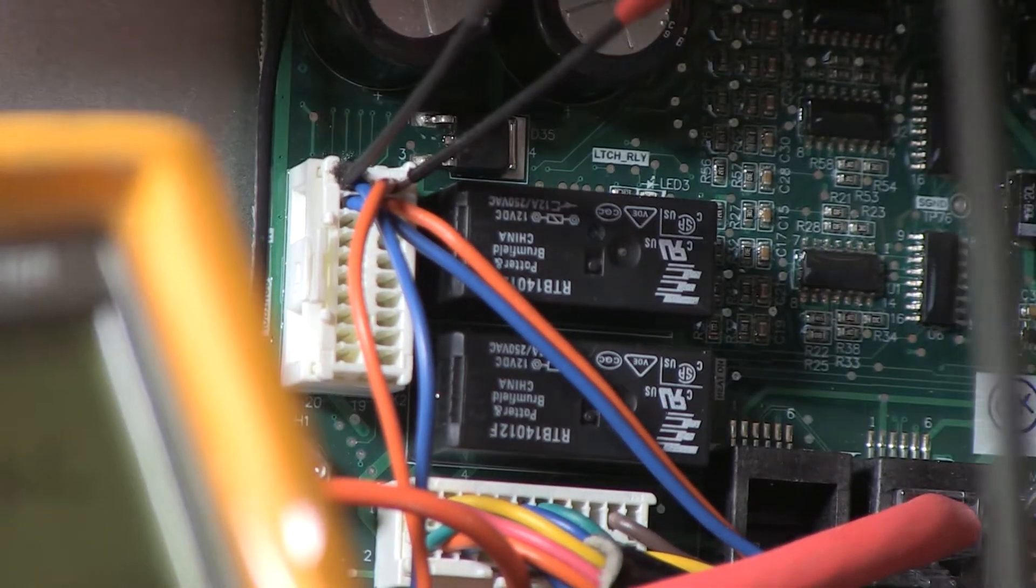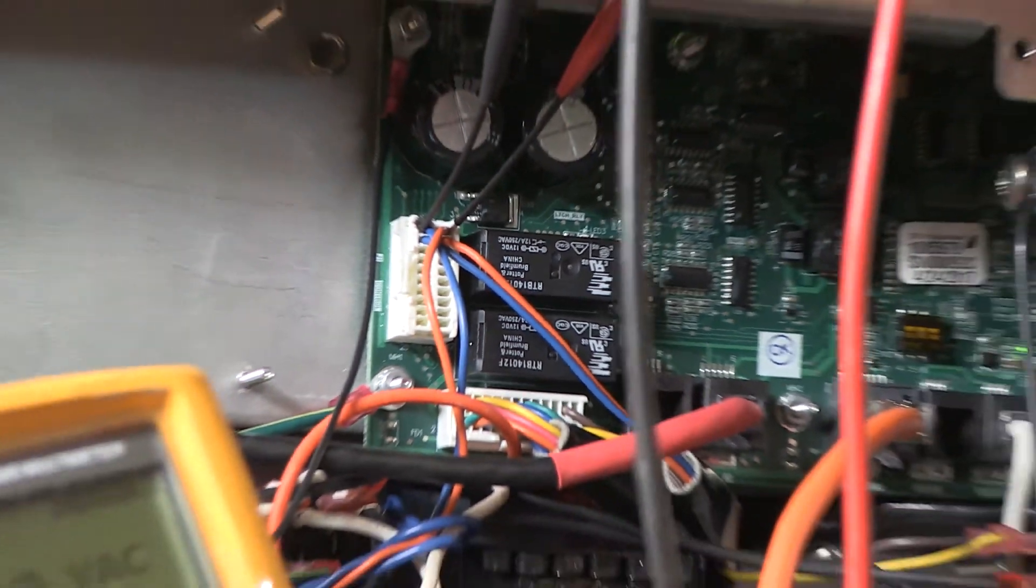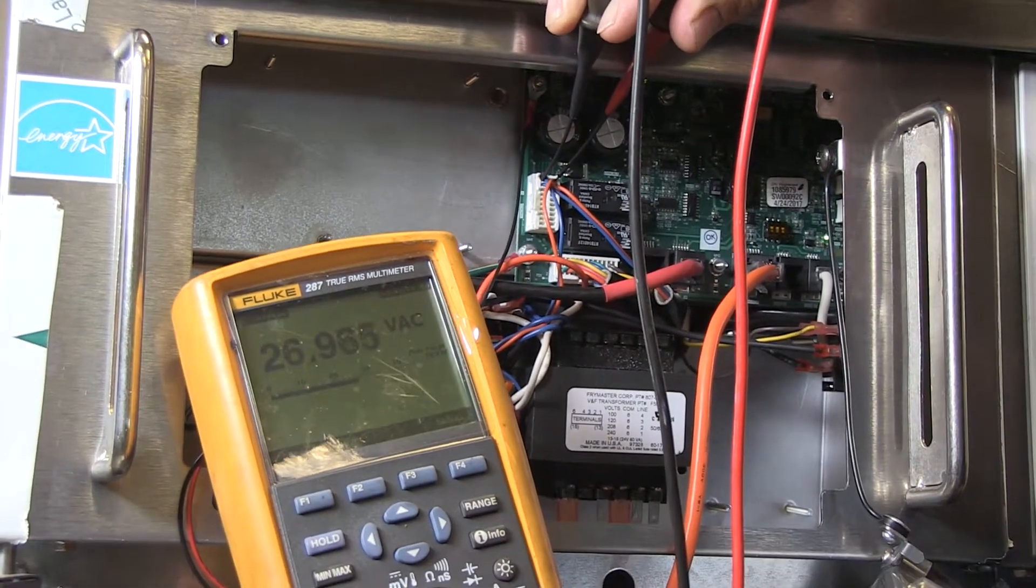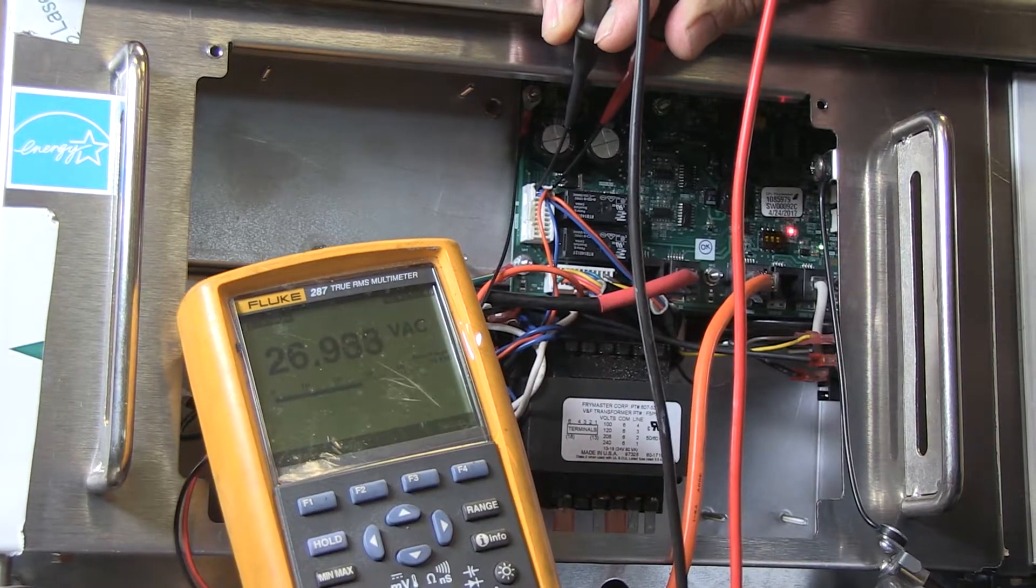With the fryer powered, insert the probes carefully into the plug's pin 1 and 2 position and check the voltage. It should be approximately 24 VAC.